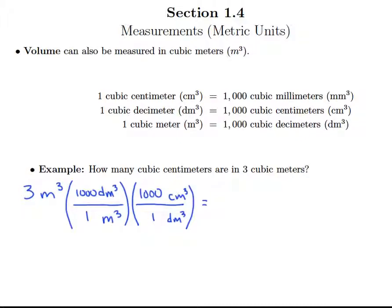And we can see with our cancellation that we now have the units we want. We have our cubic centimeters. And so what do we have? 3 times 1,000 times 1,000.